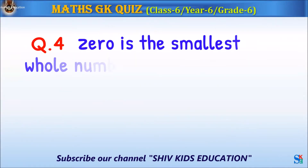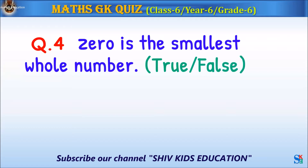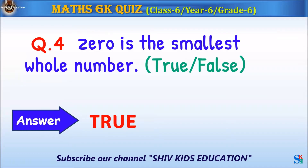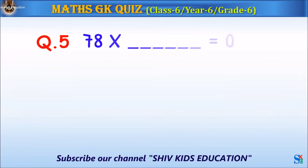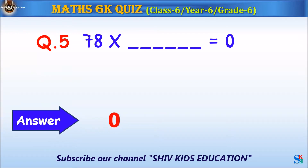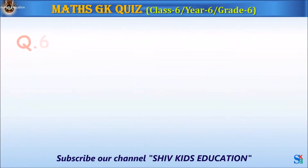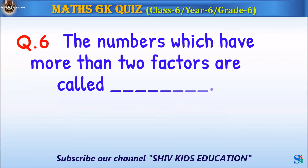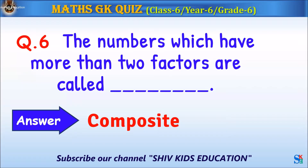Question 4: Zero is the smallest whole number — true or false? The answer is true. Question 5: Seventy-eight times what equals zero? The answer is zero. Question 6: The numbers which have more than two factors are called what? The answer is composite numbers.